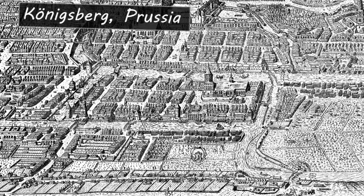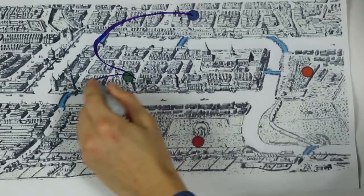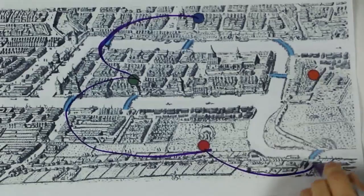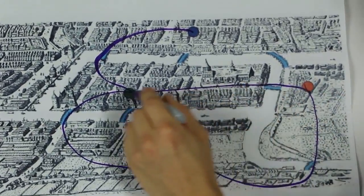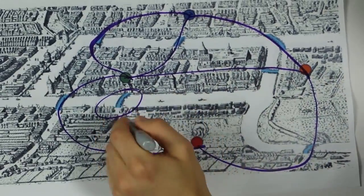In the 1700s, the city of Königsberg in Prussia had seven bridges. Some citizens were curious whether they could make a round trip while walking over each bridge exactly once. But no one could figure out how to do it.